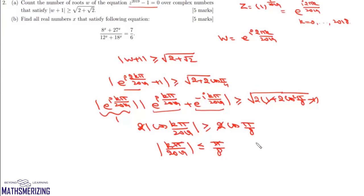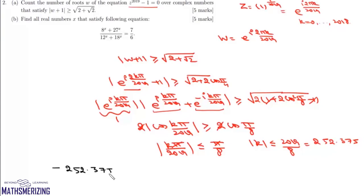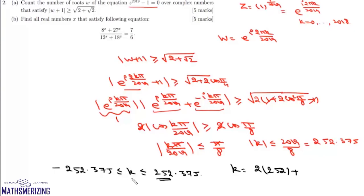Canceling π on both sides gives |k| ≤ 2019/8. Now 2019/8 = 252.375, so k lies between -252.375 and 252.375. We count the number of integral values: 2×252 (for ±1 to ±252) plus k = 0, which is 1, giving 505. So the number of roots w satisfying the inequality is 505.